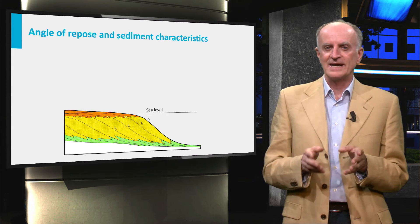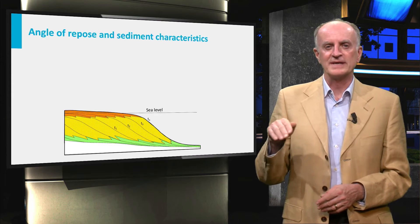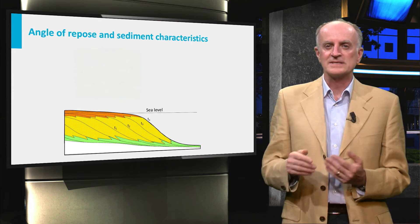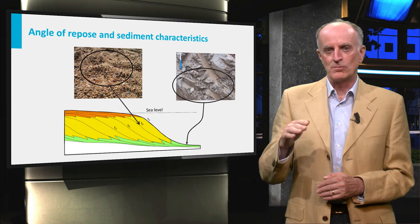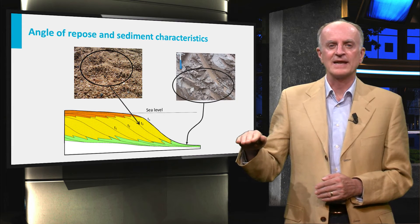In the slide you see a vertical section across a prograding delta system. You can see that the steeper layers are made up of coarse sand, while shale forms the flat-lying layers.